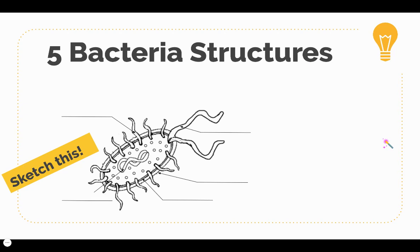The next thing we're going to look at is the five structures found on bacteria cells. Go ahead and hit pause on the video and try your best at drawing this picture of the bacteria cell in your notebook — we are going to be labeling these five structures together. The first structure we're going to label is the DNA. Bacteria cells have a circular chromosome that contains all their instructions to make proteins, and it is just floating inside the cytoplasm. Remember, they do not have a nucleus like eukaryotic cells do.